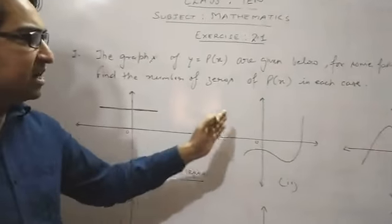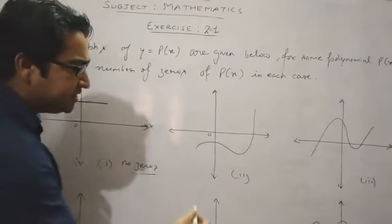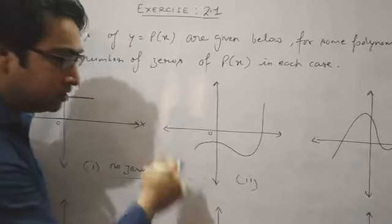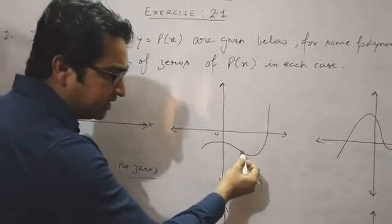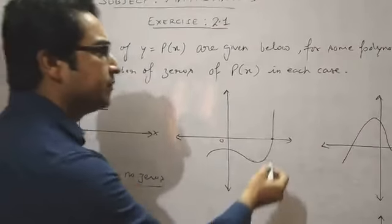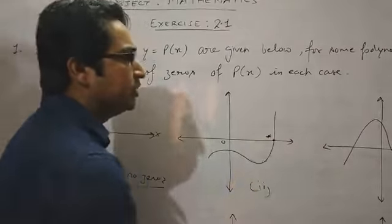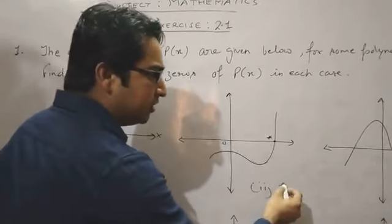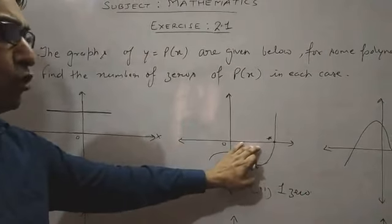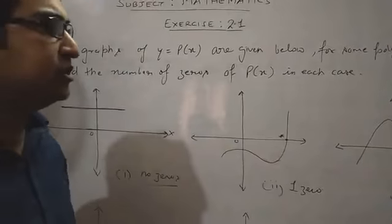Now see the second part. Here we see this vertical graph, or we can name it as parabola. This parabola intersects the x-axis at only one point. So there is only one zero of this graph. That is, for the polynomial p(x), there is only one zero.